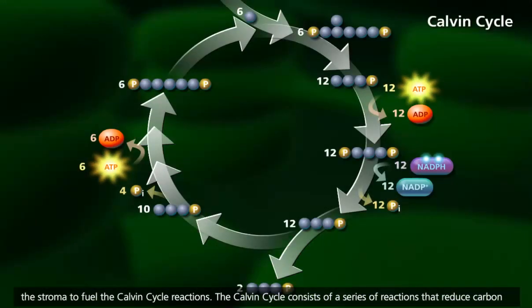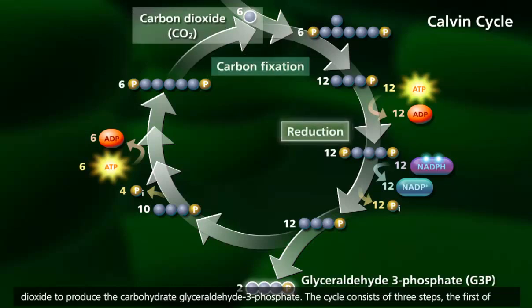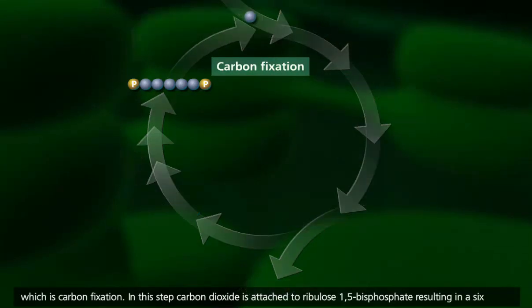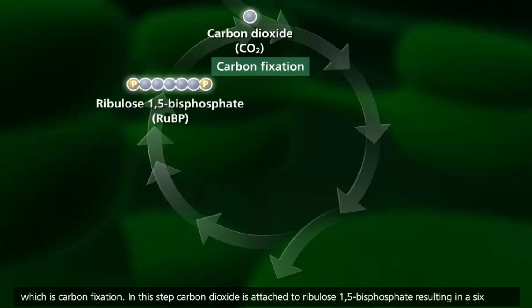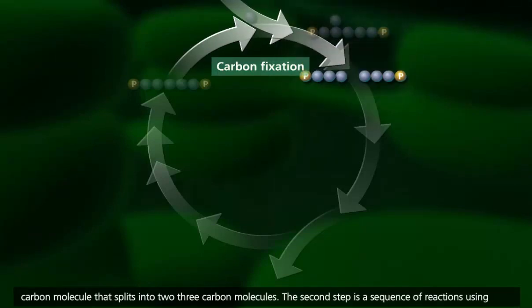The Calvin cycle consists of a series of reactions that reduce carbon dioxide to produce the carbohydrate glyceraldehyde-3-phosphate. The cycle consists of three steps, the first of which is carbon fixation. In this step, carbon dioxide is attached to ribulose 1,5-bisphosphate, resulting in a six-carbon molecule that splits into two three-carbon molecules.